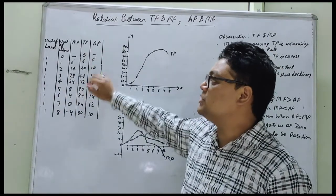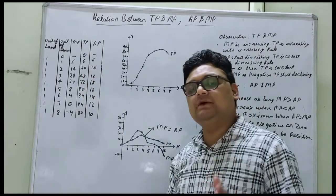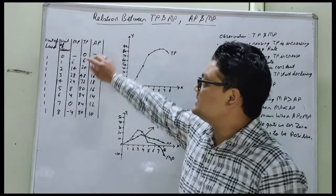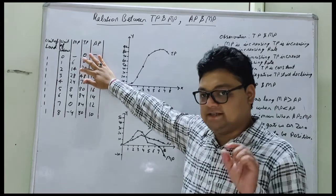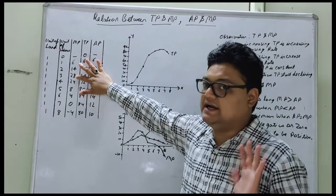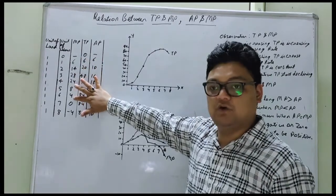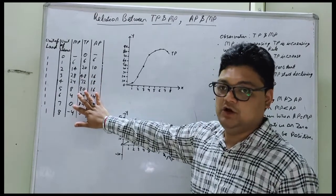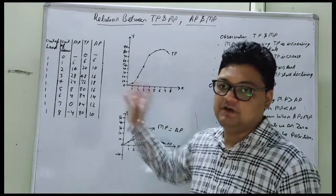Now I have assumed marginal product values as: 6, 14, 28, 24, 8, 4, 0, and minus 4. Before assuming marginal product, keep in mind: the first entry will be a dash. From the second unit onward, you first increase marginal product up to some point — for example 6, 14, 28 — and afterwards you decline it: from 28 to 24, 8, 4. There will be one position where MP equals 0, which I have placed at unit 7. And finally MP should become negative. These things should be kept in mind while assuming marginal product values.